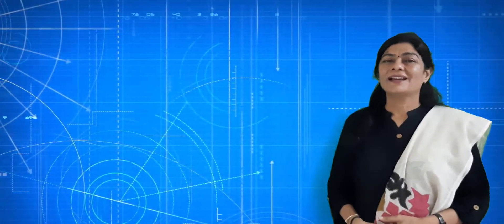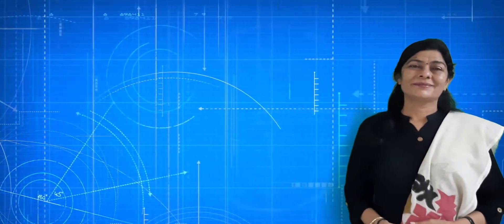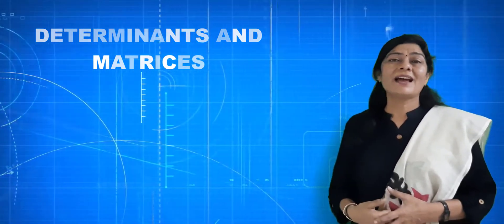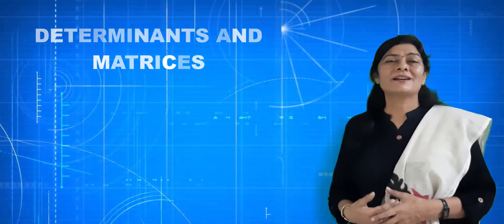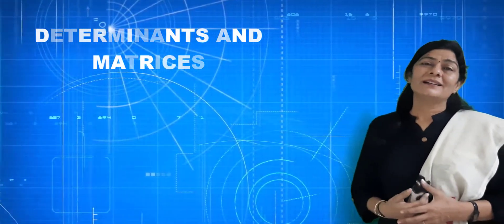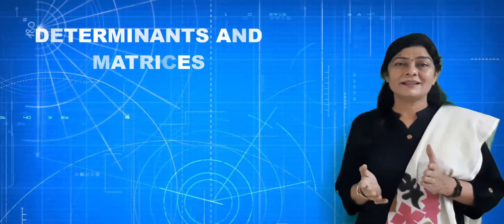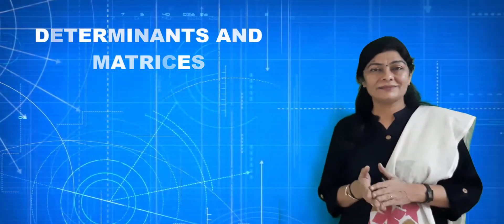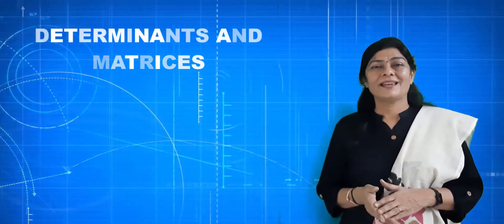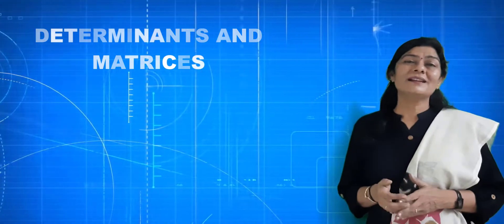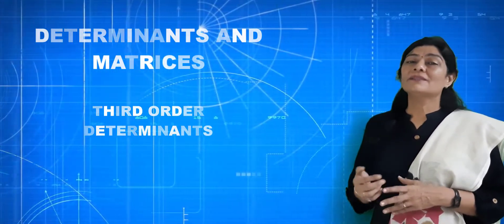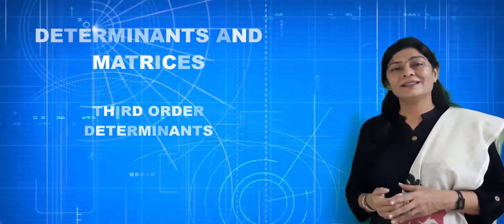Hello everyone, myself Bhavna Thakkar. Last lecture mein amne dekha second order determinants and the value or expansion of second order determinants. Determinants mein amne dekha: in determinants, number of rows and number of columns are equal, elements are enclosed in square array symbol, and determinant has a real value. Aaj am dekhenge third order determinants and the value or expansion of third order determinants.